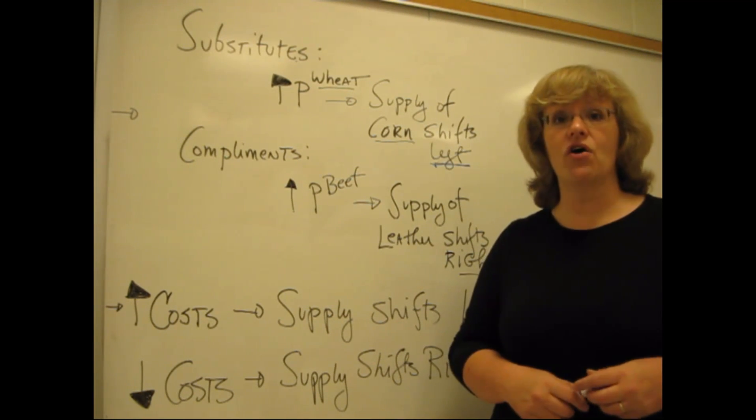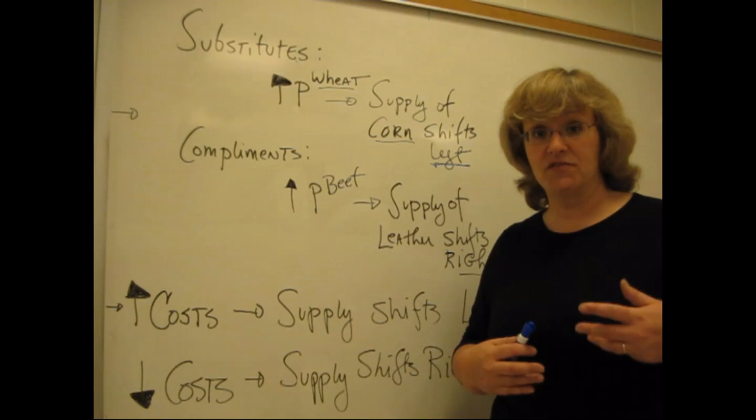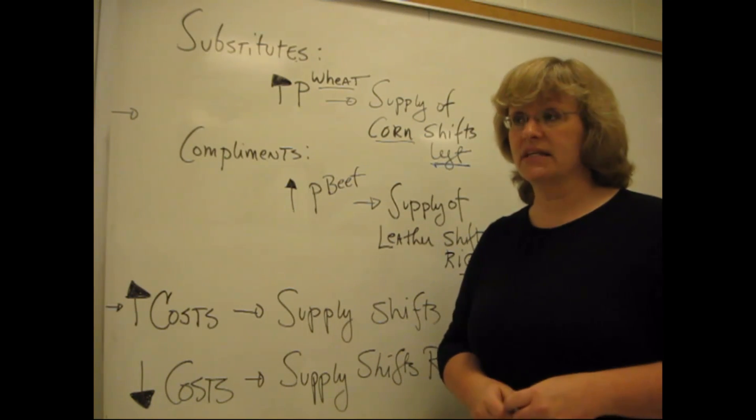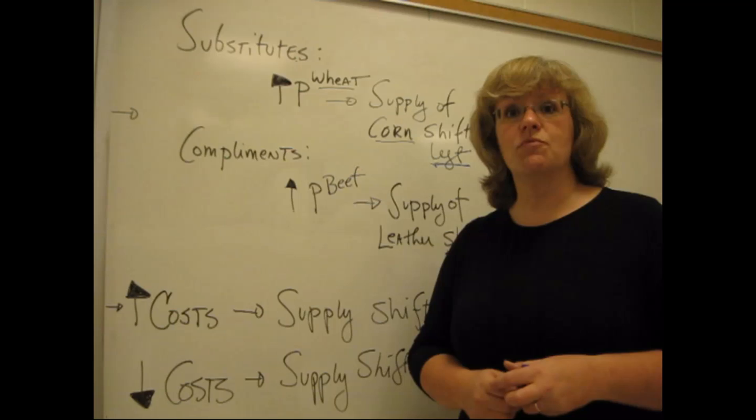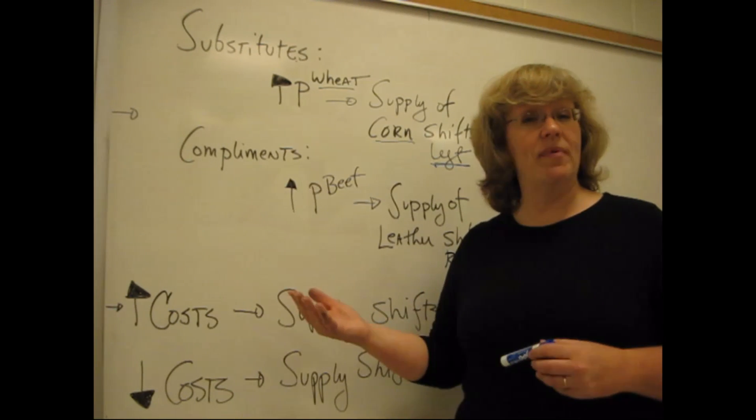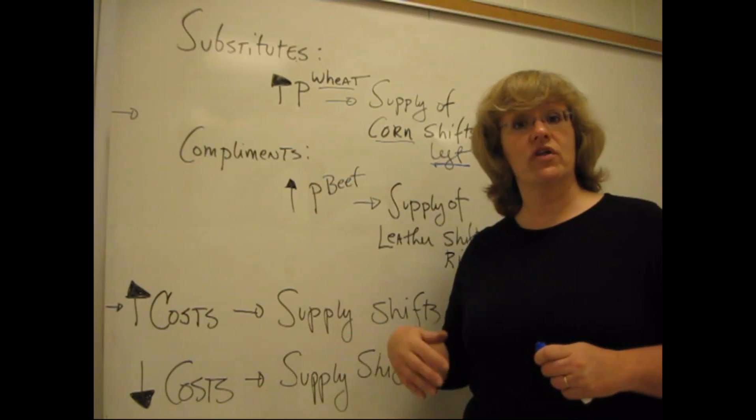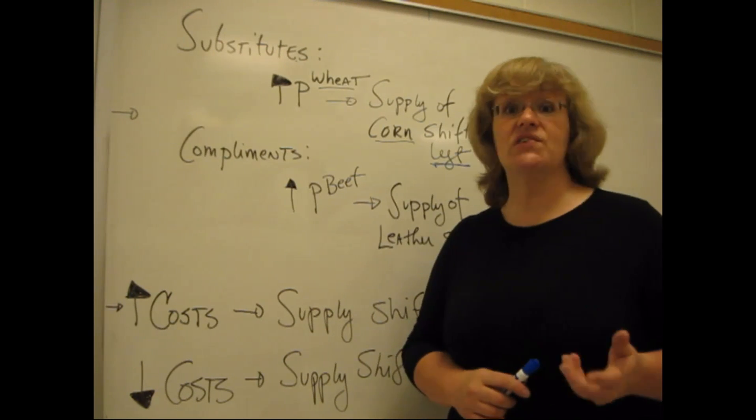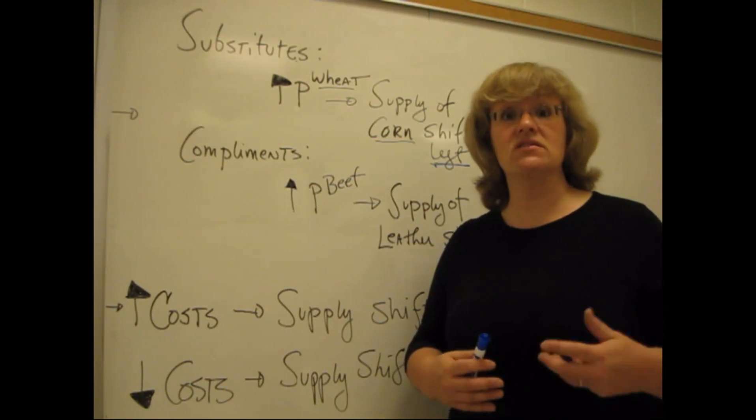The costs that we're talking about are those costs that the producer is going to have to incur to produce their product. For United States producers, the two biggest ones tend to be labor costs. So we could think here about the cost of benefits going up or the cost of wages rising. The other big cost is energy,